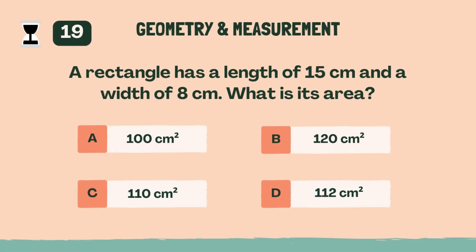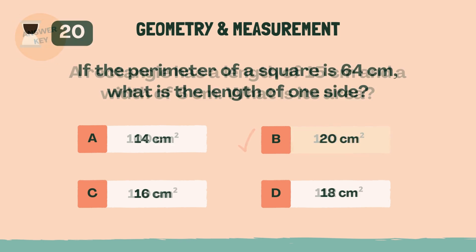A rectangle has a length of 15 centimeters and a width of 8 centimeters. What is its area? B, 120 square centimeters.